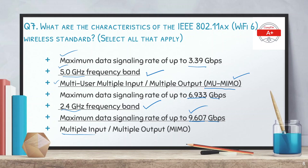Wi-Fi 6 represents a significant increase over the old Wi-Fi standards — which had throughput in megabits per second — bringing data rates up to 9.60 Gbps.